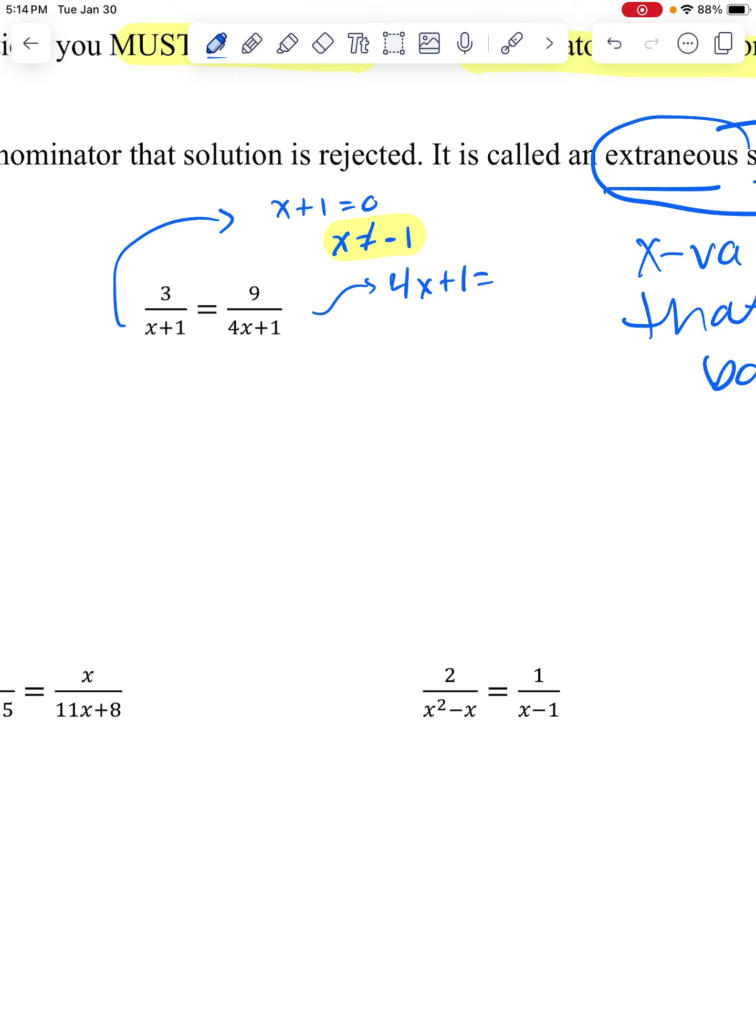Then I look at this other part and think, what's going to make 4x plus one equals zero? So I'll take away the one, I'll divide by four, and so that's the other number that x can't be. So if I get one of those answers, they're going to be considered extraneous. Now I'm going to go ahead and do the problem, and I'm going to cross multiply. You have done this before, too, in algebra one.